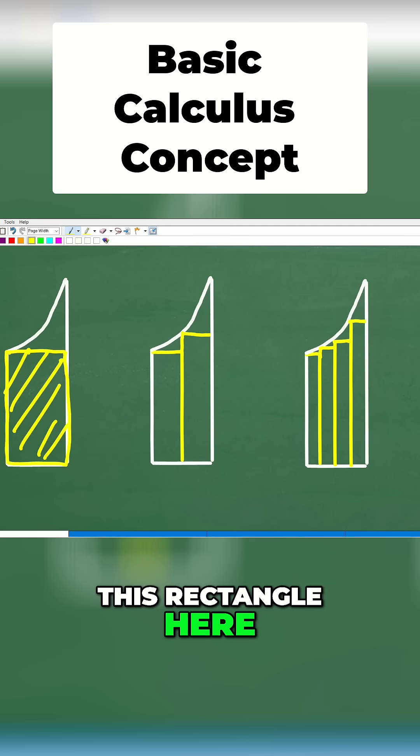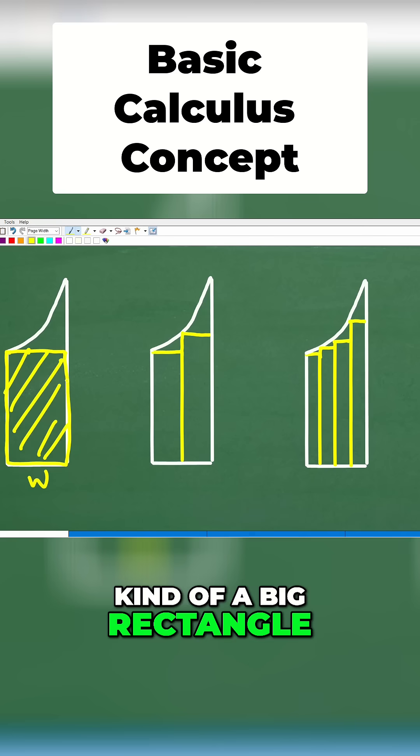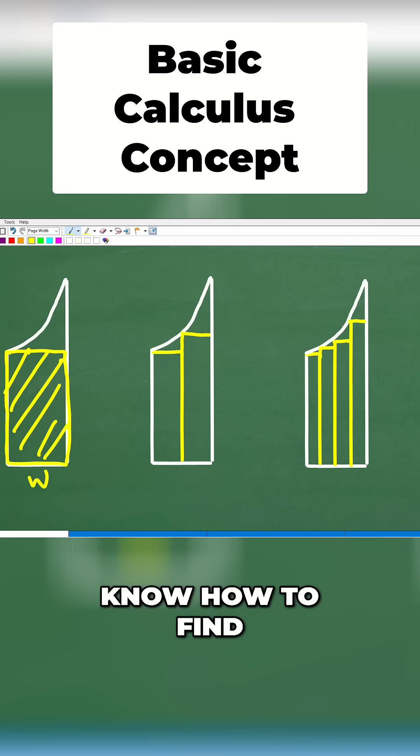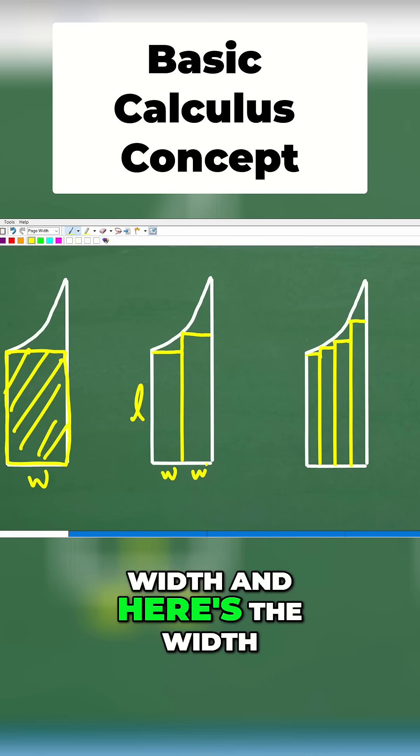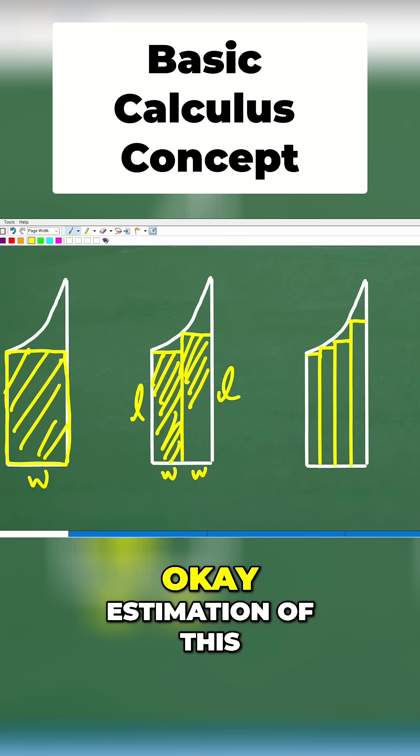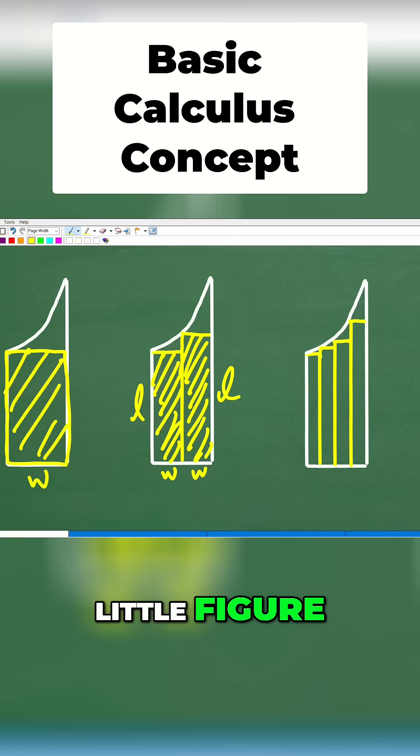Now, of course, this rectangle here, I can find the area of this by just going length times the width, right? So I can find the area of this shape, and you might be saying to yourself, well, that's an okay estimate, but because I used a big rectangle, how about we use two smaller rectangles like this? And of course, we know how to find the area of a rectangle. It's length times the width, and here's the width, and here's the length. So here, this is a little bit better estimation of this little figure.